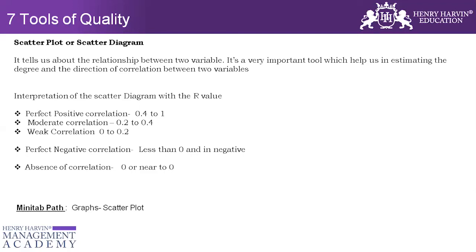We will talk in detail about how the scatter plot looks and how to interpret it during the hands-on exercises. The scatter plot is one of the best quality tools to see the correlation between two different variables. You can try it with multiple variable combinations — for example, if doing a project on productivity, you can do productivity versus quality, productivity versus customer satisfaction, productivity versus defect rate, and so on. With all possible combinations, you will get meaningful information to help you decide which variable to work on.